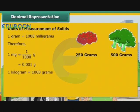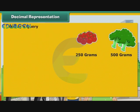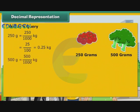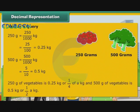1 kilogram is equal to 1000 grams. Therefore, 1 gram is equal to 1 by 1000 kg, that is 0.001 kg. Now let us express the vegetables Akshay's mother purchased as kilograms. 250 grams is equal to 250 by 1000 kg, that is 25 by 100 kg, which equals 0.25 or 1 by 4 kg. 500 grams is equal to 500 by 1000 kg, that is 5 by 10 kg, which equals 0.5 or 1 by 2 kg.